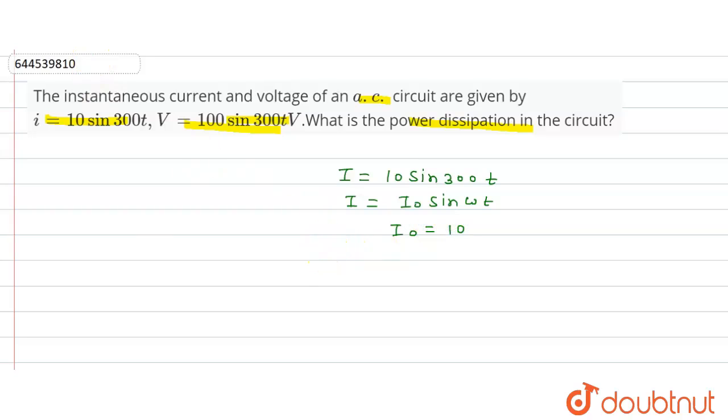Now, the voltage equation is given as V = 100 sin 300t volts. We know the general equation of voltage is V = V₀ sin ωt.